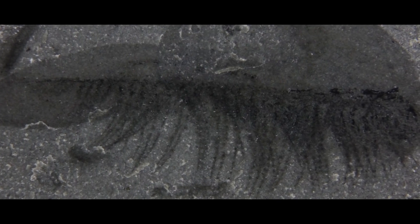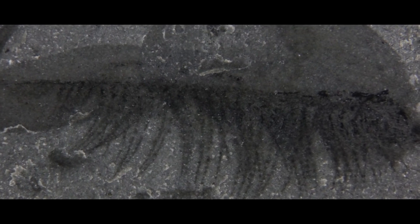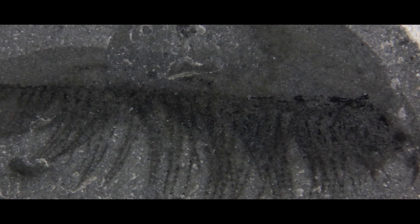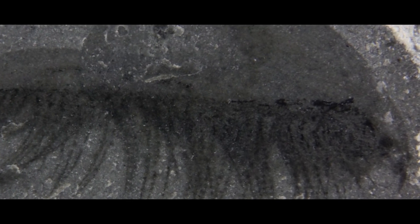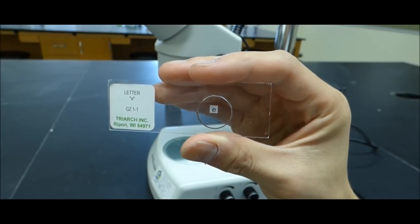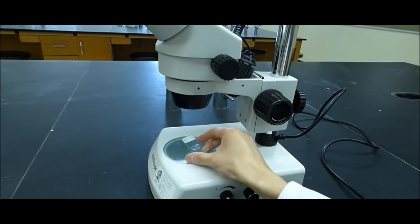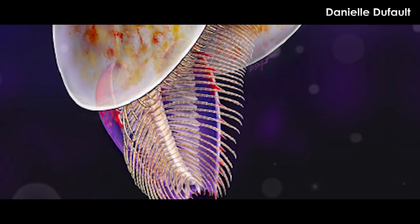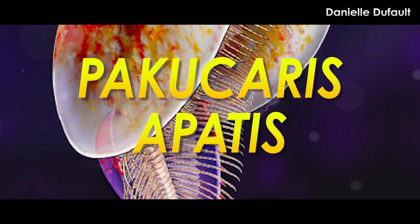These specimens were carefully prepared in the field, chunked, prepared for travel, and brought back to the museum, where they remained until they could get some further preparation via airscribe. These things are tiny, so the scientists working on them needed to photograph them under a stereomicroscope. When all was said and done, the thing was named Pacucaris apetus.